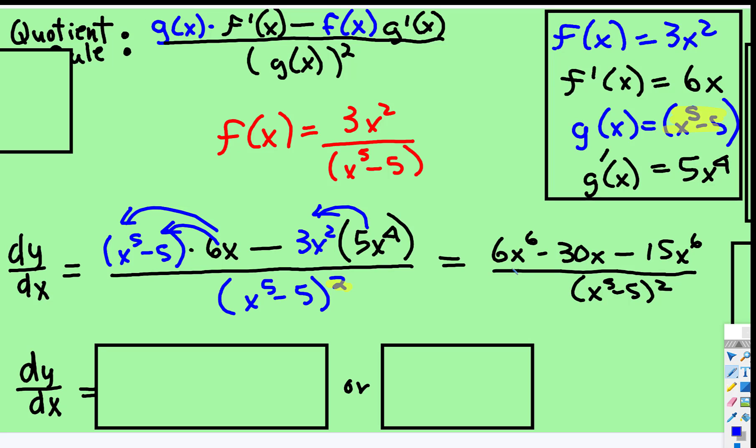So we have 6x to the sixth subtract 30x. And then this is to subtract 15x to the sixth. Well notice these are the same type. Remember combine like terms? So 6 subtract 15 is negative 9.